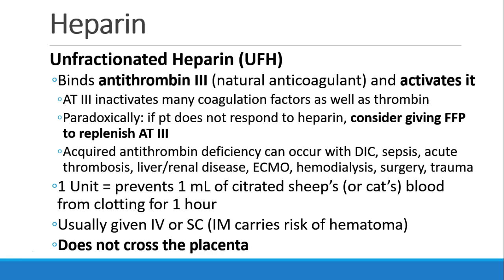Patients can have acquired antithrombin deficiency through DIC, sepsis, acute thrombosis, liver or renal disease, being on ECMO or cardiac bypass, hemodialysis, or surgery and trauma. When we dose heparin, we dose it in units, where a unit of heparin is the amount that would prevent one milliliter of citrated sheep's or cat's blood from clotting for one hour.